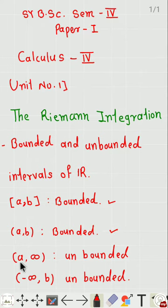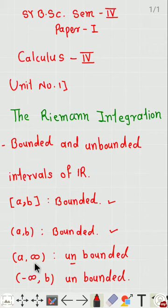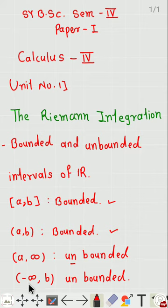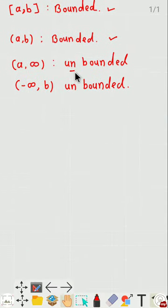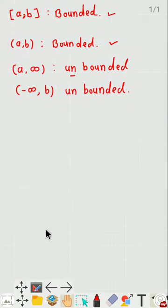The third is the open interval (a, ∞). This interval is unbounded because the lower bound exists but the upper bound does not exist. Similarly, the next interval is (-∞, ∞), and this interval is also unbounded. We can write some more examples of bounded or unbounded intervals.